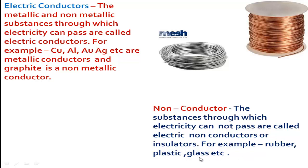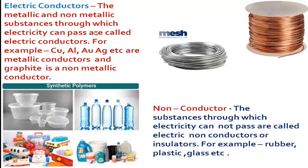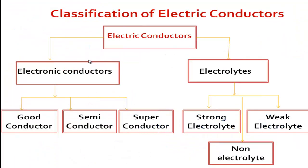For example, rubber, plastic, glass, etc. are insulators. To summarize: substances through which electricity can pass are called electric conductors, and substances through which electricity cannot pass are called insulators or non-conductors. Now we will know about the classification of electric conductors.